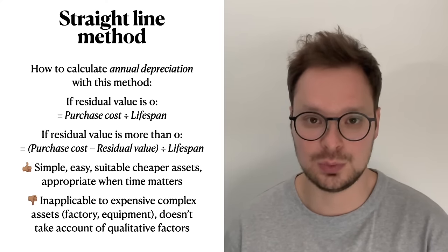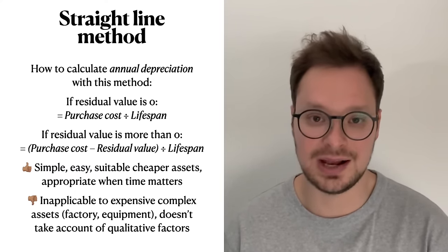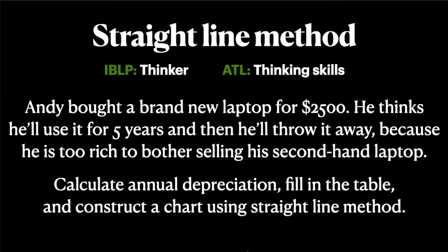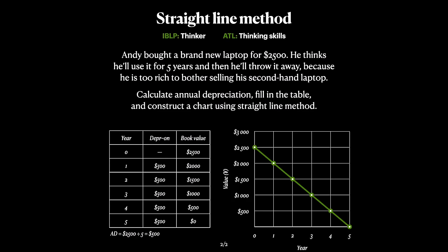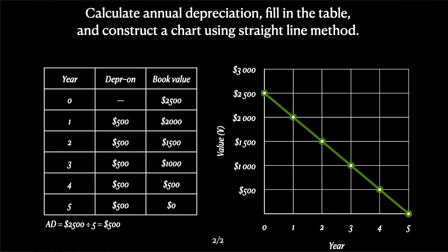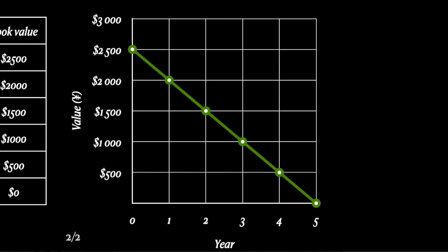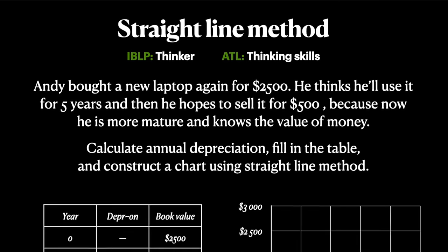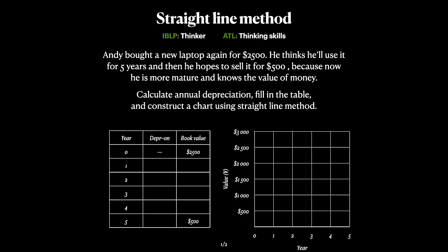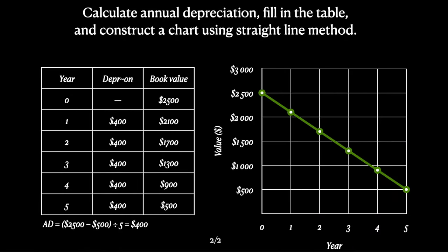If we put it on a graph, annual depreciation using the straight-line method decreases book value evenly each year. Now let's say Andy got mature and decides to sell his new laptop for $500 at the end of its lifespan. In this case annual depreciation would be different: ($2,500 − $500) ÷ 5 = $400 per year. The graph would show a different, lower annual depreciation rate. Overall, the straight-line method is really easy, simple, and works really well when time matters — because assets just get old over time.